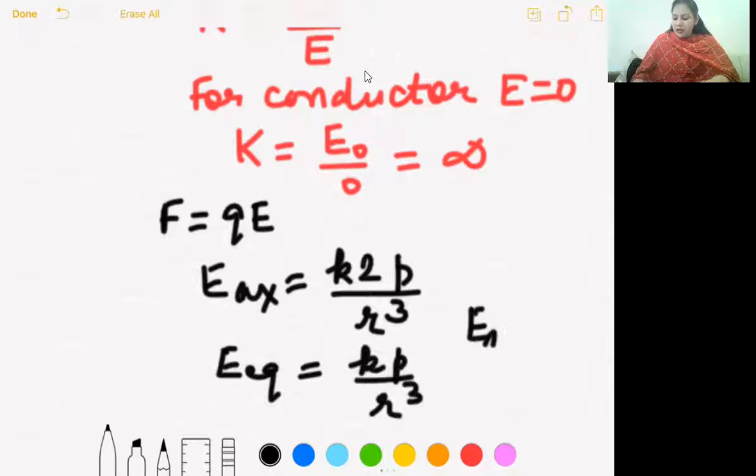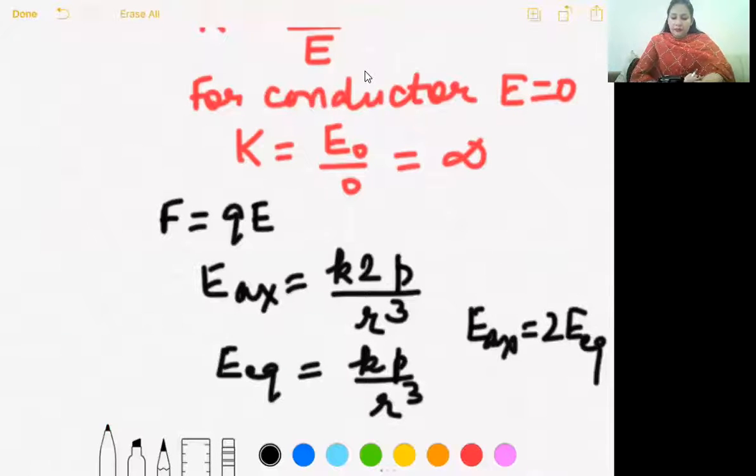Due to short electric dipole, E axial over E equatorial. For a short dipole, our formula for electric field at a point on axial line was k into 2pr, and equatorial was k into pr over r cubed. When you compare, E axial comes out to be twice E equatorial. These are special cases for short dipole. Ninth question: electric field intensity is usually taken to be 10 percent of dielectric strength.